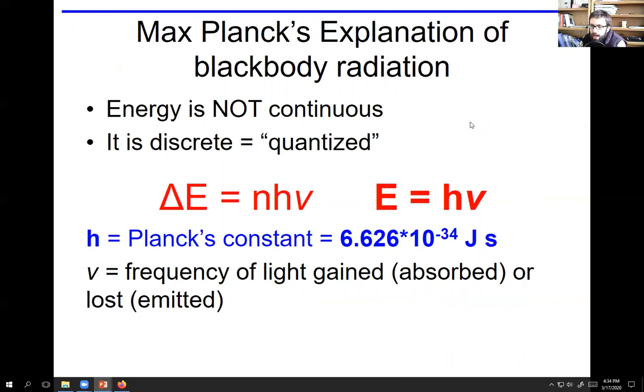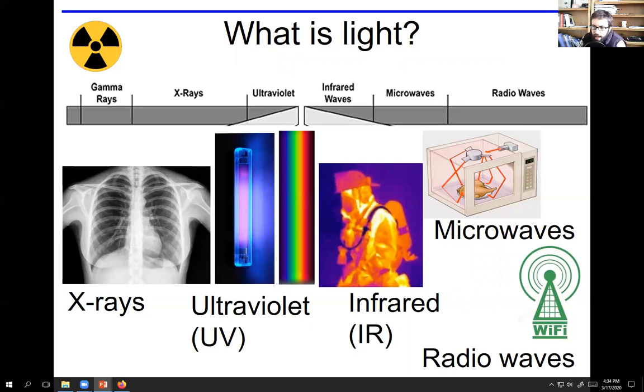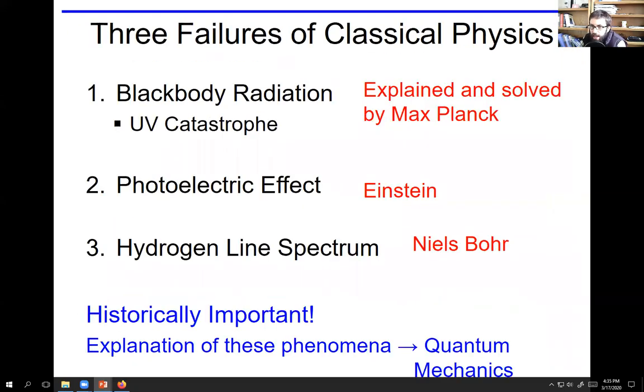I think we can stop this video here. Basically what we've gone over is a little bit about the history of quantum mechanics, talked about blackbody radiation and how there were some problems. We'll continue on talking about the other two problems, which are the photoelectric effect and the last one, the hydrogen line spectrum, or actually the fact that anything has a line spectrum. So we'll go over that in the next video.